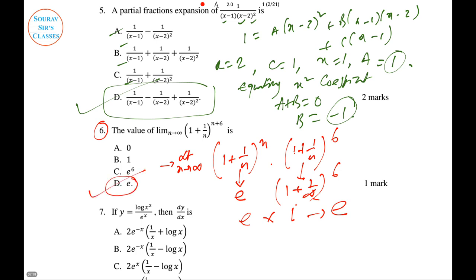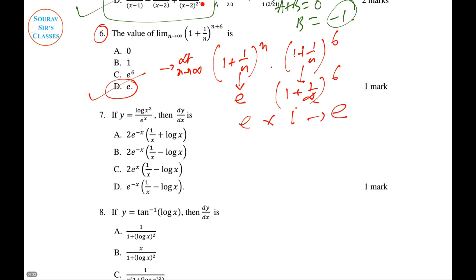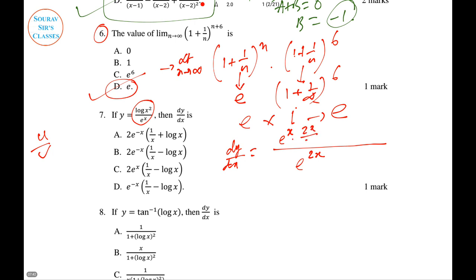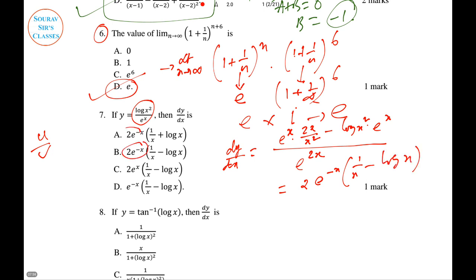Question 7: Differentiate y using the u/v quotient rule. dy/dx = (denominator × derivative of numerator minus numerator × derivative of denominator) all over denominator squared. The denominator is e^(2x), derivative of numerator gives 2x/x², and derivative of e^x is e^x. Simplifying gives e^(minus x)(1/x minus log x). Option B is correct.